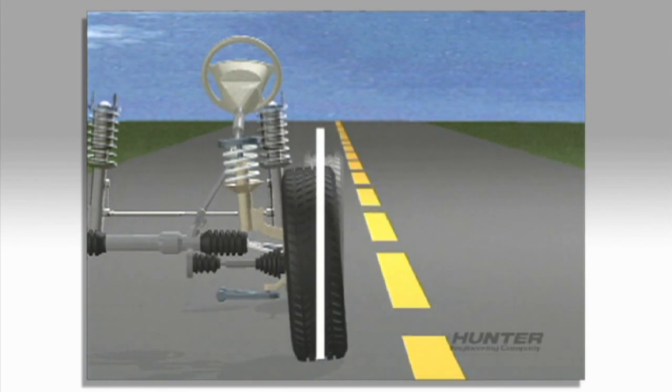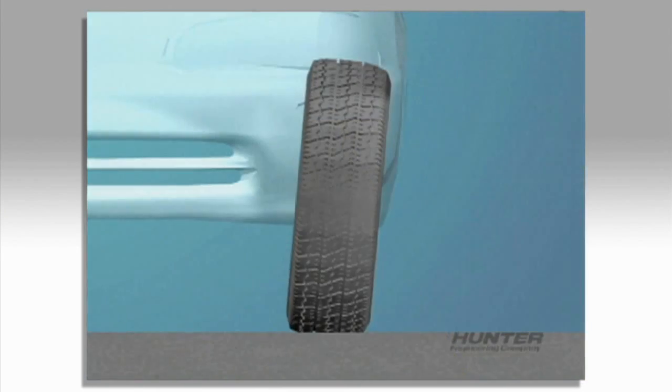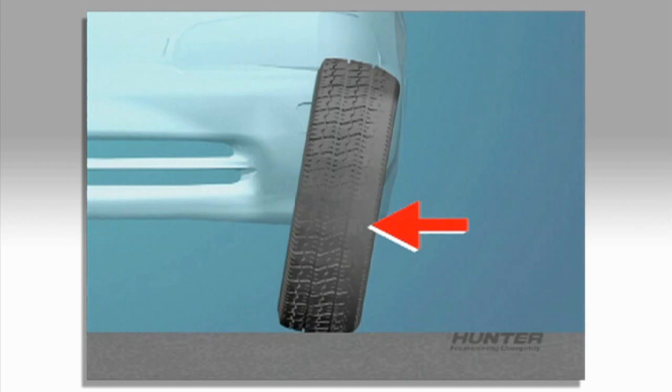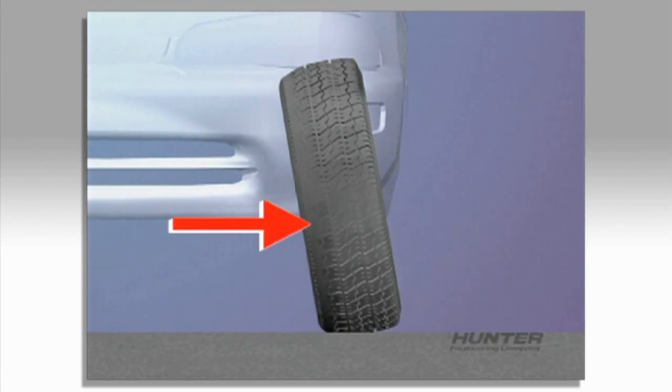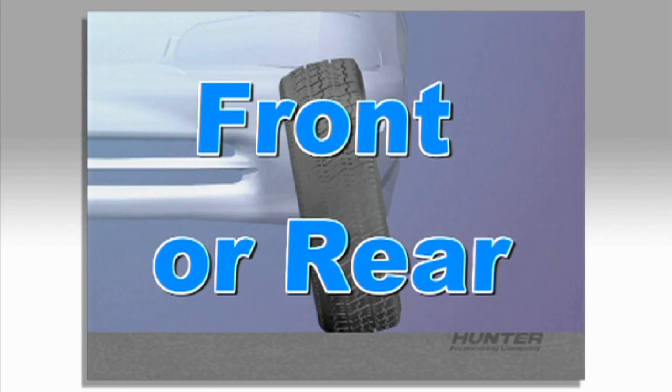Camber, which is the inward or outward tilt of the wheel, can cause outside shoulder wear if the wheel is tilted too far out. If the wheel is tilted too far inboard, the inside shoulder will wear. This problem can occur at the front or rear.